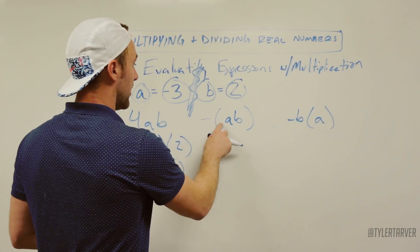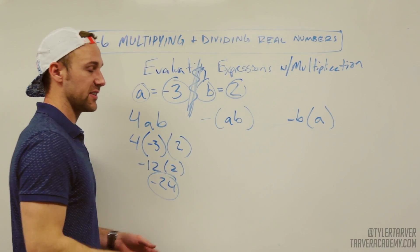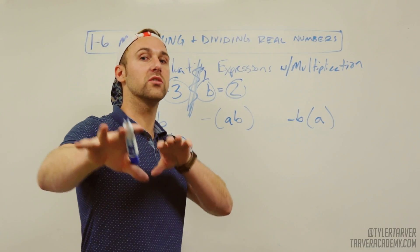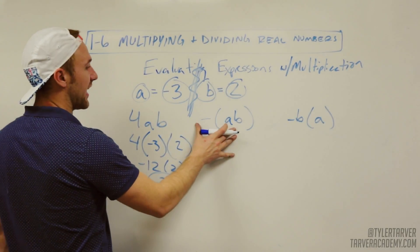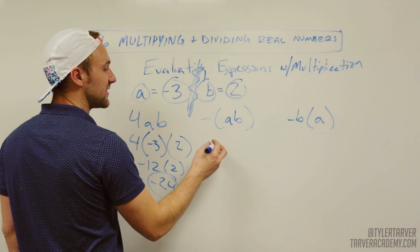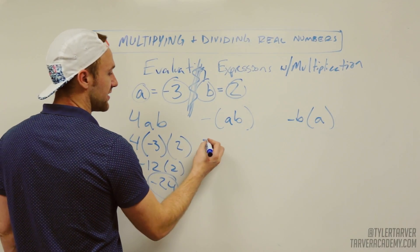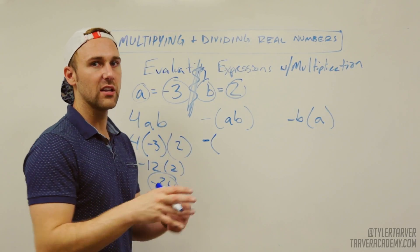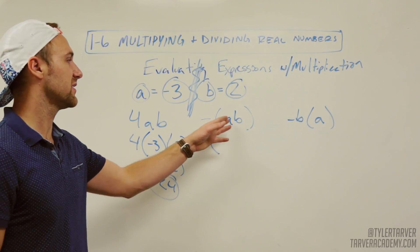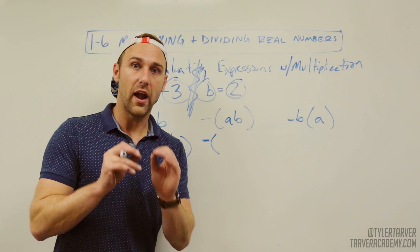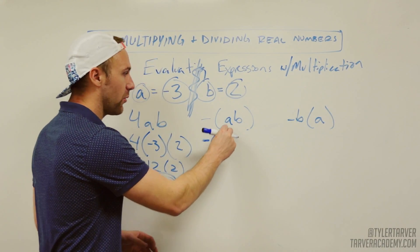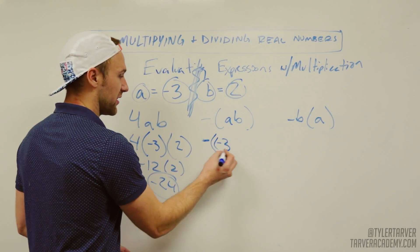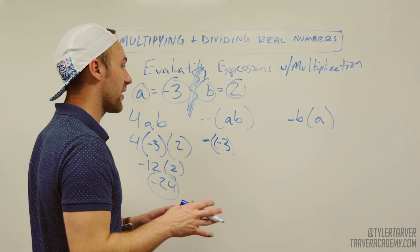Next we've got negative parentheses A times B, close parentheses. This is where it gets kind of crazy and people mess up, so stay with me. We've got negative AB. Keep everything the same until you do what I said with the parentheses. So we've got negative parentheses, and A is negative 3. A lot of people will think: oh, it's already got a negative in the parentheses, I'll just put a 3 in there. Do not do that. Wherever A is, exactly where A is, replace that with negative 3. You can put it in parentheses again if you want, as long as you don't mess up.